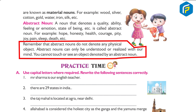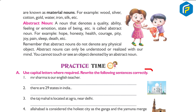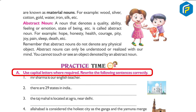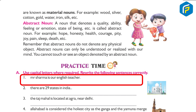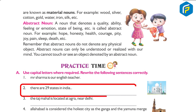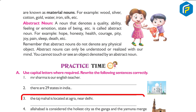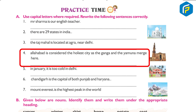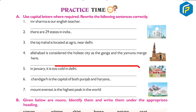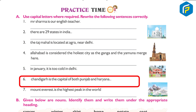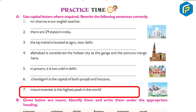Practice time. (A) Use capital letters where required; rewrite the following sentences correctly: 1. Mr. Sharma is our English teacher. 2. There are 29 states in India. 3. The Taj Mahal is located at Agra near Delhi. 4. Allahabad is considered the holiest city as the Ganga and the Yamuna merge here. 5. In January, it is too cold in Delhi. 6. Chandigarh is the capital of both Punjab and Haryana. 7. Mount Everest is the highest peak in the world.